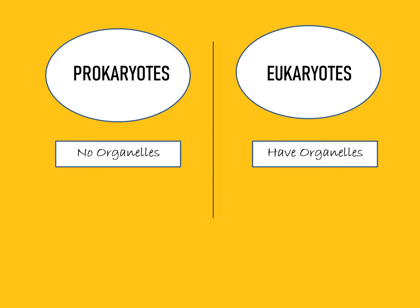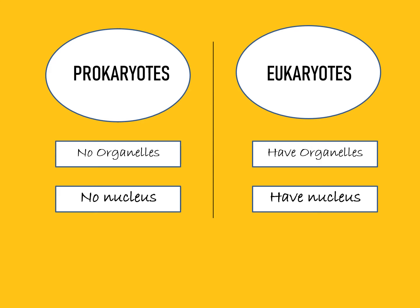Prokaryotes have no organelles, whereas eukaryotes have organelles like endoplasmic reticulum, Golgi apparatus, etc. In prokaryotes there is no nucleus, and in eukaryotes there is a nucleus where the genetic materials are formed.